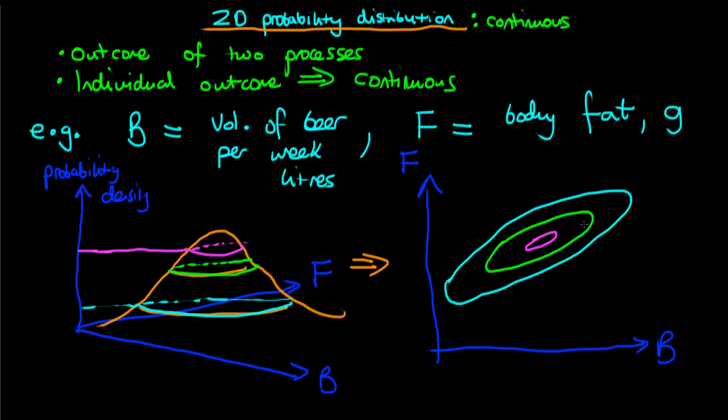Because humans tend to find two dimensions easier to think in than three dimensions, we often use this kind of thing on the right-hand side here, this visualization trick which is known as a contour plot. But remember, whenever you see a contour plot, the probability density is coming out of the page at you, or out of the screen in this case, where the pink line here corresponds to a high probability density, the green to a slightly lower one, and the light blue to a slightly lower one still.